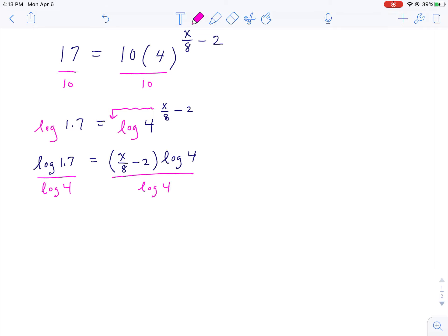Right, and just kind of a lot of steps here, but nothing all that difficult. So you get log of 1.7 over log of 4. I guess if you're comfortable you could get a decimal for that, but I'm going to just hit the calculator once at the very end of the problem.